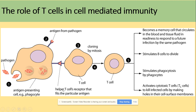A T helper cell — one type of T cell — has a receptor that fits into this specific antigen. Once they bind together, the T cell is activated and begins dividing by mitosis, producing many cloned T cells.